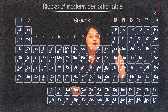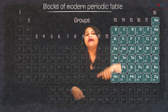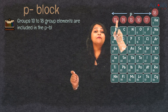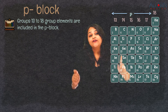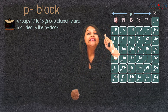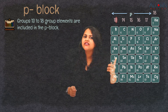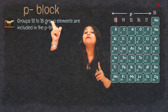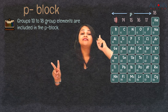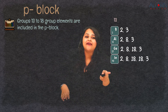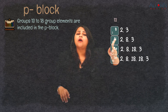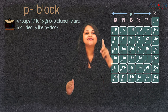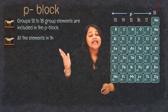Moving to another block, we have groups 13 to 18, which together constitute the P block of the modern periodic table. In group 13, the last digit is 3, meaning the outermost shell has 3 electrons — just as S block group 1 had 1 and group 2 had 2. Elements like boron and aluminium have electronic configurations 2,3 and 2,8,3 respectively, with 3 electrons in their outermost orbits, placing them in the 13th group of the P block. Overall, P block elements have 3 to 8 electrons in their outermost shell.